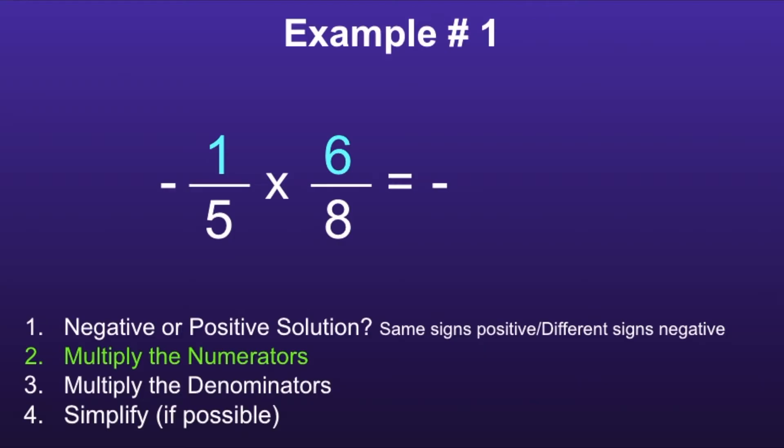Step two: multiply the numerators. One times six is equal to six. Step three: multiply the denominators. Five times eight is equal to forty.